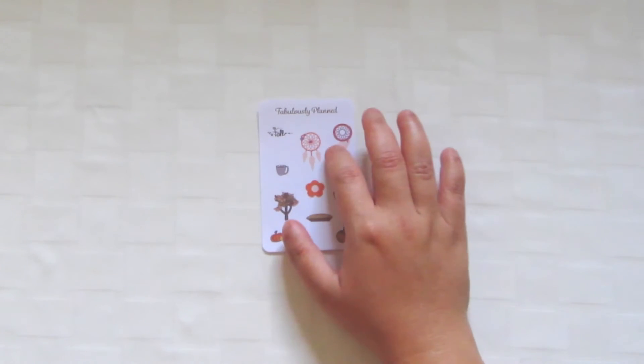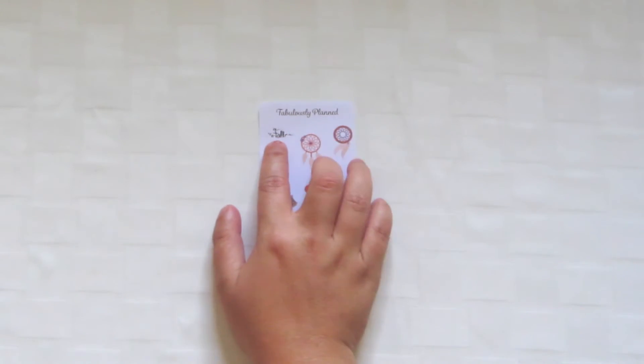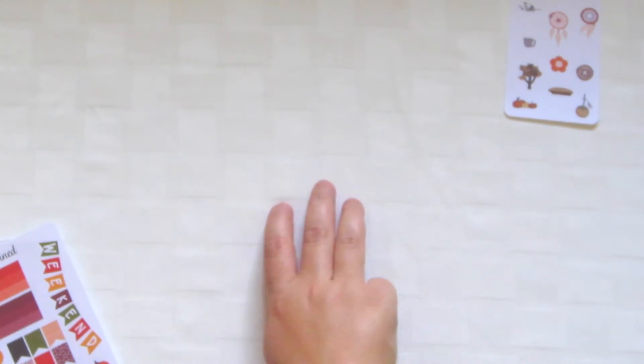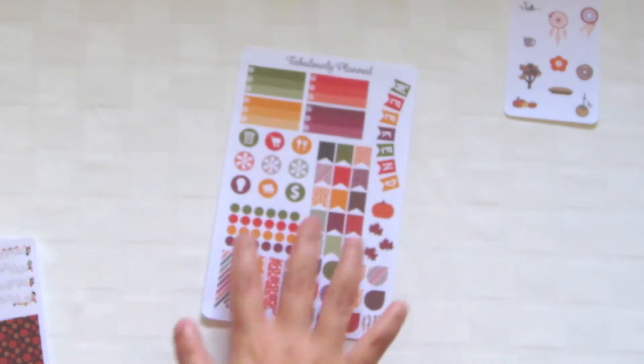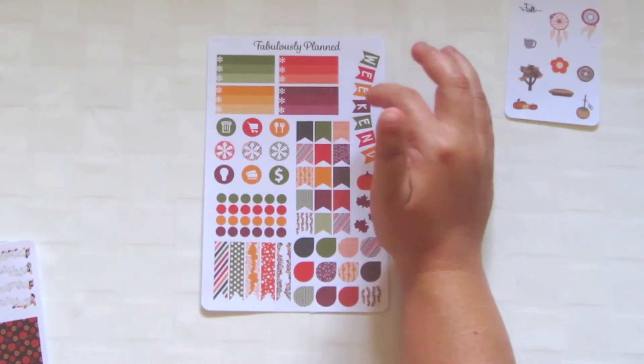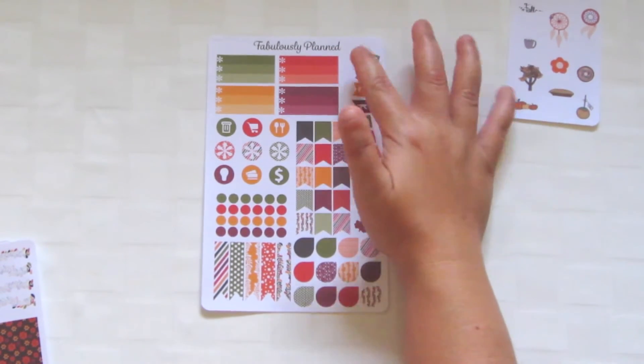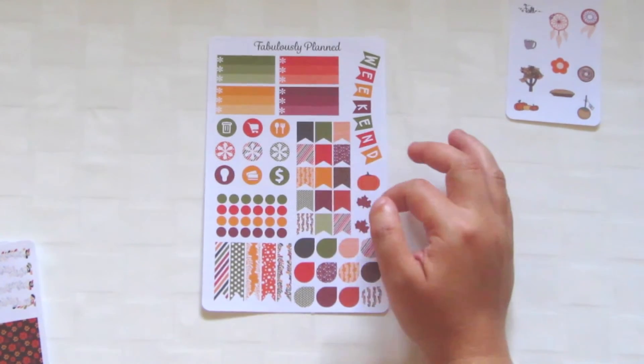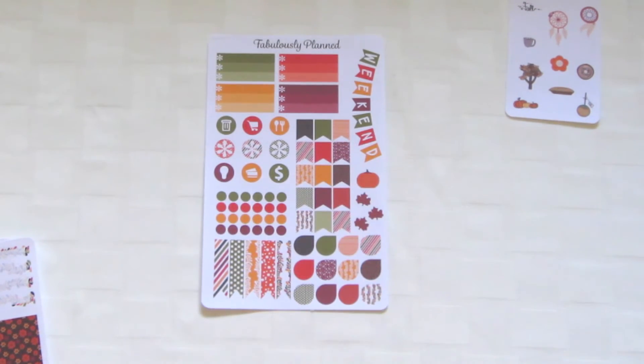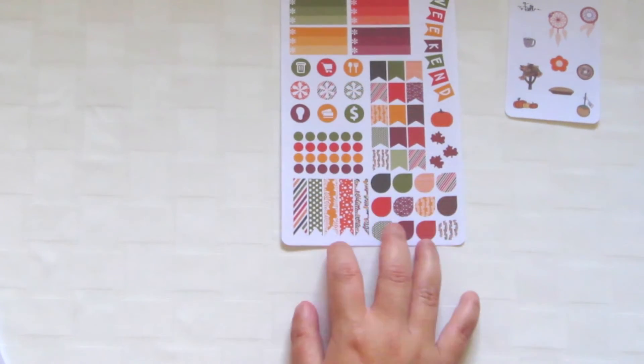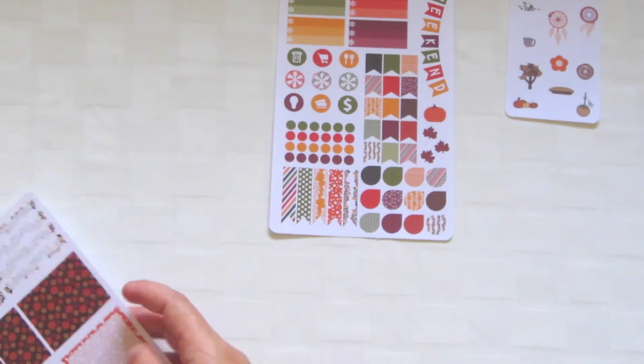These dream catchers are beautiful, and then this really pretty fall word right there. I got her three fall themed sticker sheets, and this one I just loved the colors. There's purple in there. It's a very functional sheet. It has a weekend banner, all these really tiny flags which you could use as decoration, these cute leaves, and I really love the patterns.